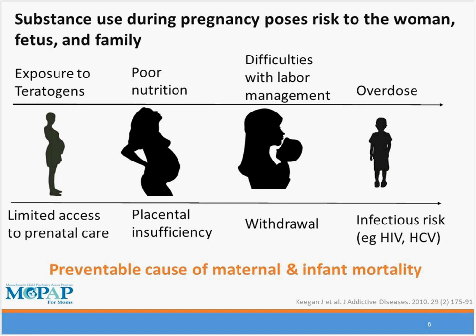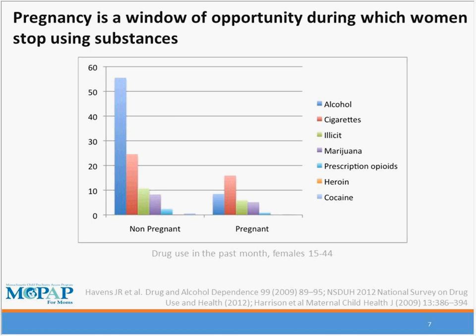Some substances of abuse are teratogenic. Having a substance use disorder is often associated with poor nutrition and limited access to prenatal care. From an obstetric standpoint, substance use disorders can be associated with placental issues or difficulties with labor management. Withdrawal issues can complicate management depending on what substance the person is withdrawing from and can carry significant risks to health, including increased risk for death with some substances. Overdose is a catastrophic risk we must think about. Infectious risk is also important when injection of substances is involved. This is a preventable cause of maternal and infant mortality, and pregnancy is a time when women are motivated to engage in treatment.